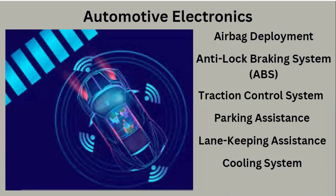Now let's come to automotive electronics. In automotive electronics, there are so many sensors in your car and vehicle. You must have heard about driverless cars — driverless cars are not possible without sensors. Even a regular automobile will have at least five to ten sensors in it. Airbag systems, anti-lock braking systems, traction control, parking assistants, lane keeping assistants, and cooling systems all work based on sensors.